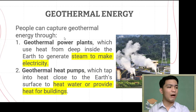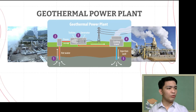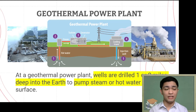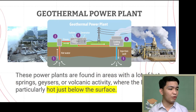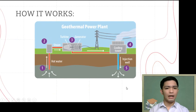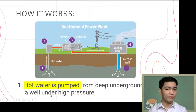Let's focus on geothermal power plants. These are pictures of geothermal power plants and an illustration showing how they work. At a geothermal power plant, wells are drilled one or two miles deep into the earth to pump steam or hot water to the surface. These power plants are found in areas with a lot of hot springs, geysers, or volcanic activity where the earth is particularly hot just below the surface.